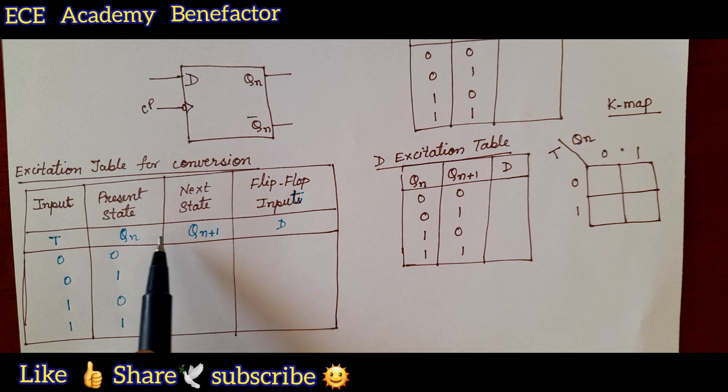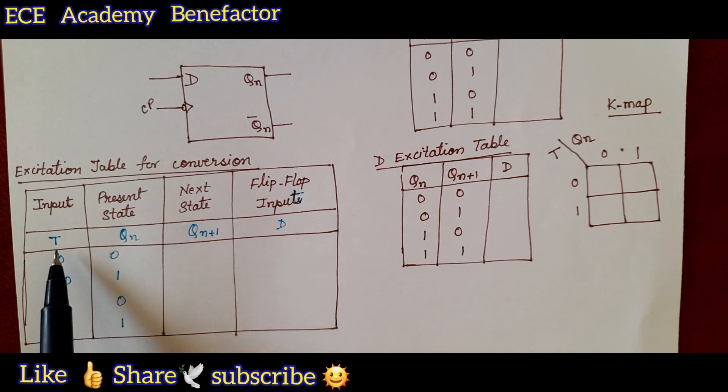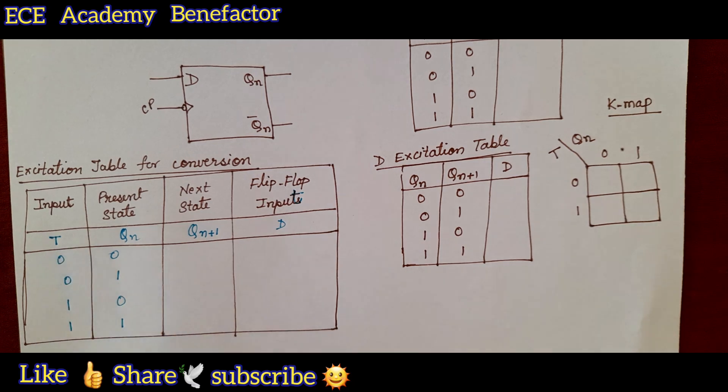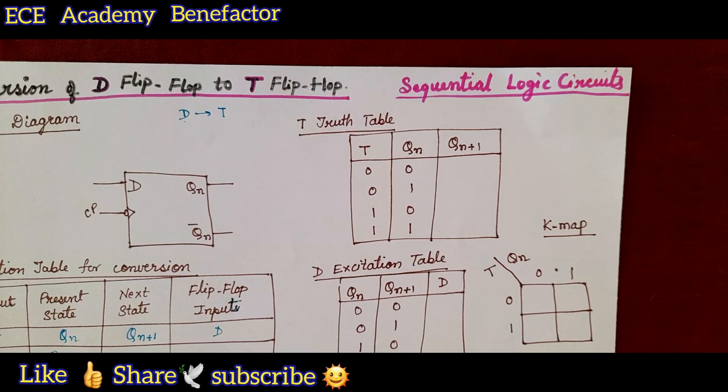Now we need to write Q n plus 1. To write Q n plus 1 we have to know the truth table of T flip-flop. What is the truth table of T flip-flop?